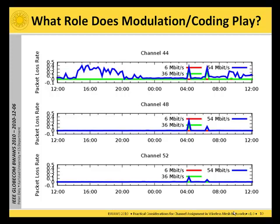Here we measured the packet loss rate during one day over different channels — channel 44, 48 and 52 — for 6 megabits physical layer rate, 36 megabits physical layer rate, and 54 megabits physical layer rate. In the top picture you can see that 36 megabits has almost zero packet loss all the time, while 54 megabits has a significant amount of packet loss during some periods of the day.